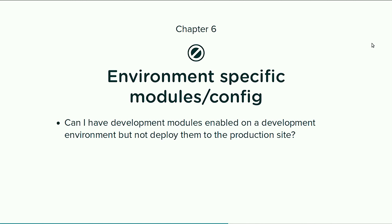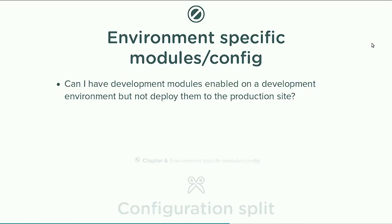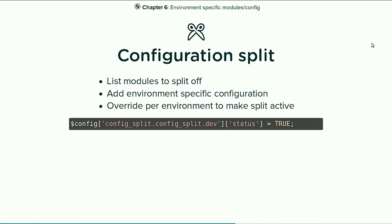How do we use this for environment-specific modules or configuration? For example, you have the devel module and you don't want it on production. Configuration management is all-or-nothing, so you'd have to disable devel, then export — that's a hassle and error-prone. Instead, you do it with configuration split: you list the module you want to split off, add environment-specific configuration, then override which split is active per environment. If the split is active, the module will be active. If the split is not active when you import, it's as if the module was not there — it will get disabled or not be enabled.